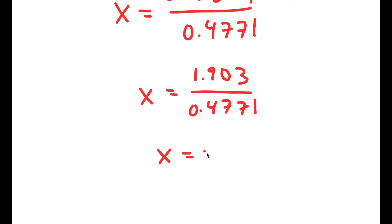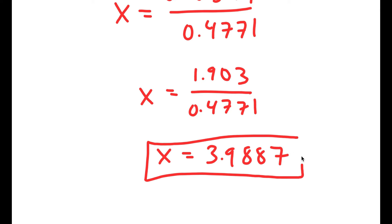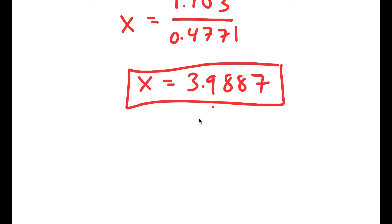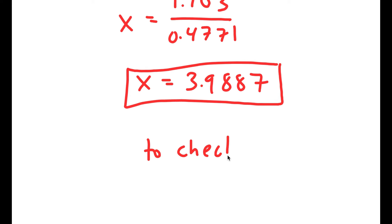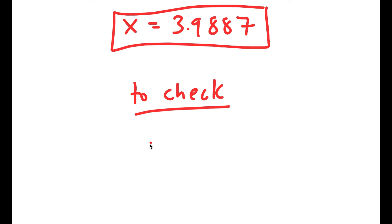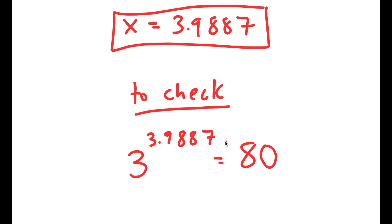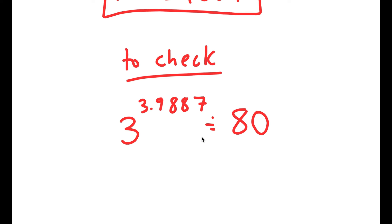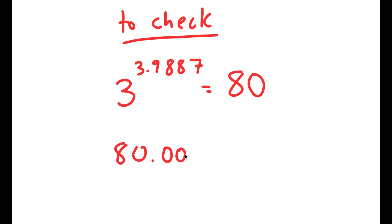And this is equal to 3.9887, so this is the value of x. To check, my original equation was 3 to the power of x equals 80, so now I have 3 to the power of 3.9887. And 3 to the power of 3.9887 is equal to 80.0007, which is approximately the same thing as 80 — so this is right.